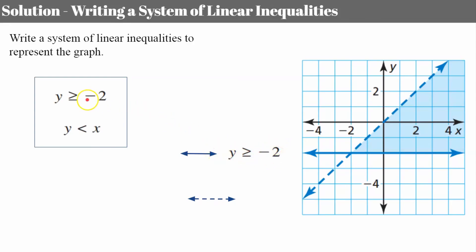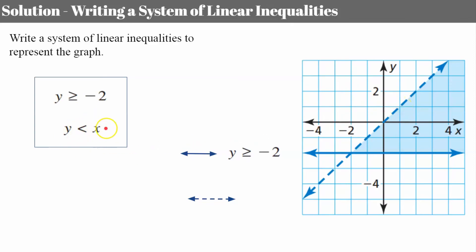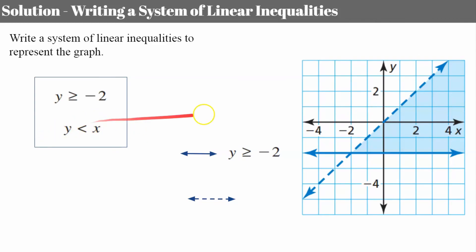For my second inequality, I have a y-intercept of zero and a slope of one — so y equals x plus zero, which is just y = x in slope-intercept form. I know it's either going to be less than or greater than.